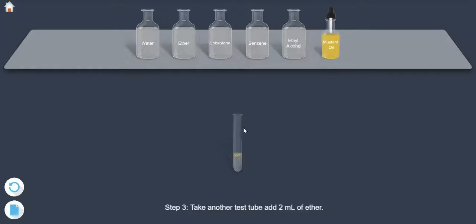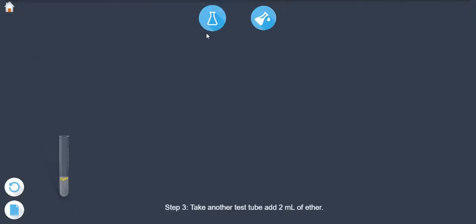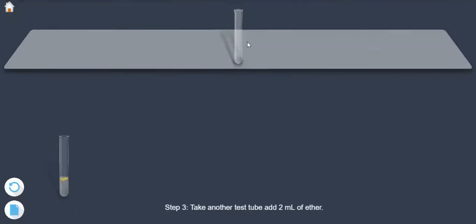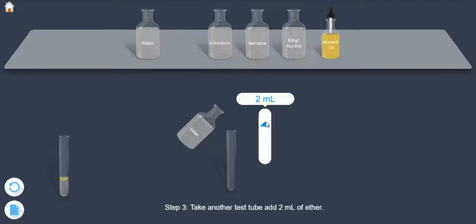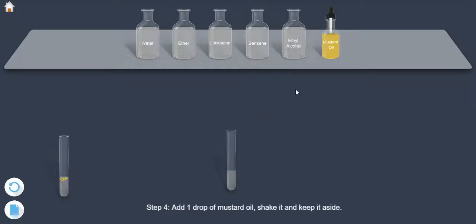Step 3. Take another test tube, add 2 ml of ether. Step 4. Add 1 drop of mustard oil, shake it and keep it aside.